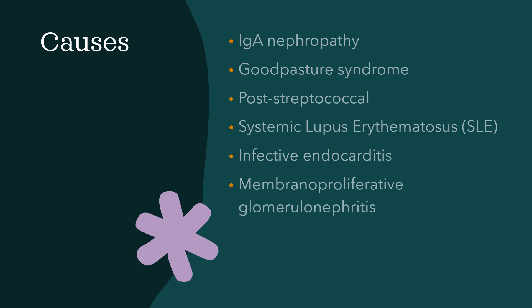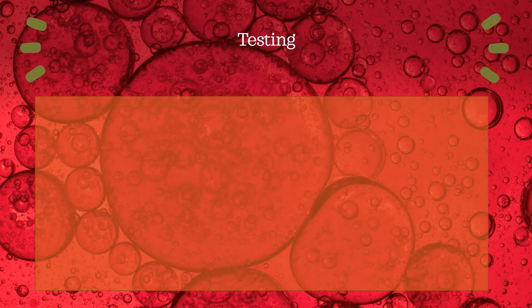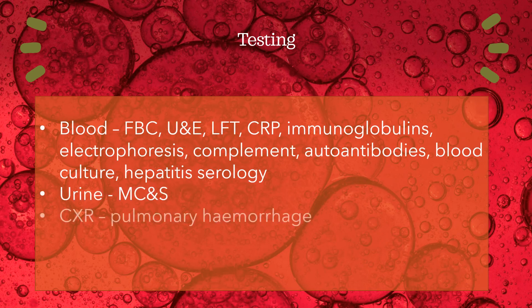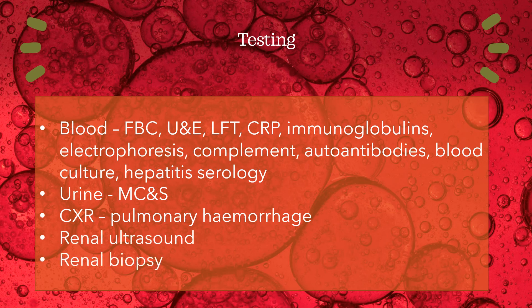We came across MPGN earlier as it causes both nephrotic and nephritic changes. To reiterate, this is a condition where immune complexes are also deposited in the glomerular mesangium, resulting in basement membrane thickening. Of course, there are many other conditions which result in nephritic syndrome too. With both of these syndromes, you want to do lots of tests if you suspect nephritis. Bloods, urine, chest x-rays, and renal ultrasounds are all useful, but renal biopsy is important for a definitive diagnosis. Working through the tests, you'll notice that some are particularly important for looking at specific causes.